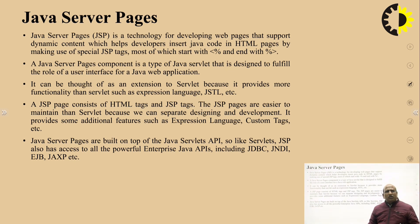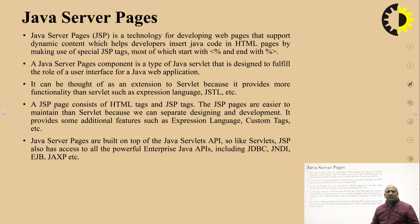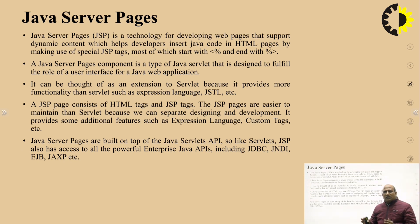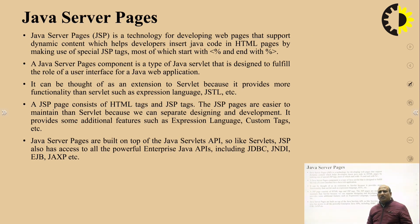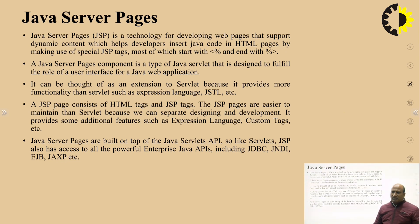Java Server Pages are built on top of the Java Servlet API. Like servlet, JSP also has access to all the powerful enterprise Java APIs including JDBC, JNDI, EJB, JXP, etc. All the services provided by Java Servlet are also provided by JSP — like JDBC, JNDI, and EJB — because JSP is built on top of servlet, meaning JSP will ultimately be converted into an equivalent servlet.